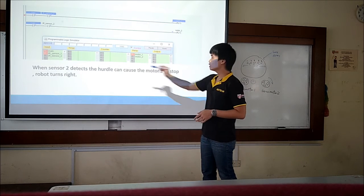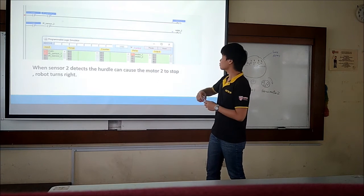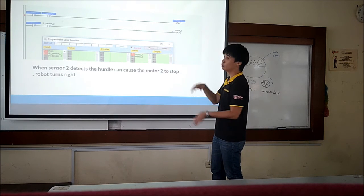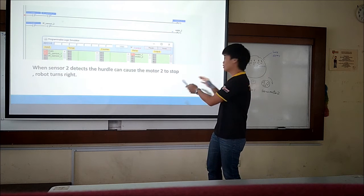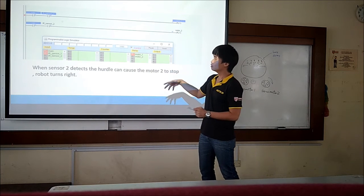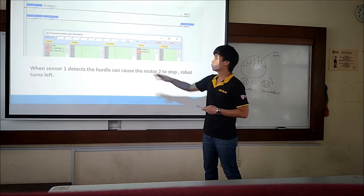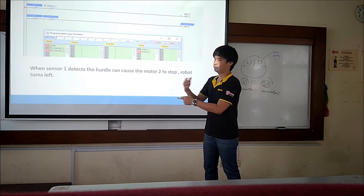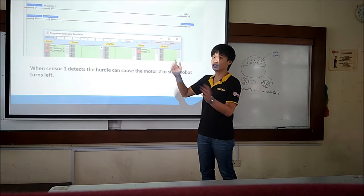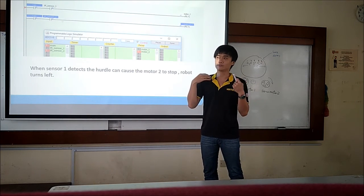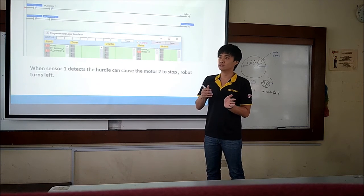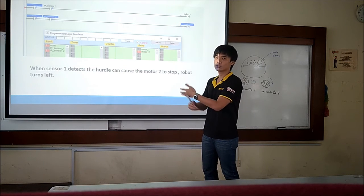When sensor 2 detects an obstacle, servo motor 2 will stop, so the robot will turn right. When sensor 1 detects an obstacle, it will produce an output signal to make motor 2 stop, and then the robot will turn left. This function makes the robot turn in the correct direction to prevent collision with obstacles and ensure the robot continues to move around and cover all areas of the room.